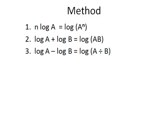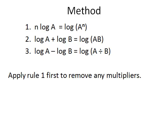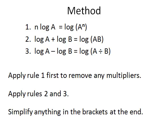Here's our method. We have three rules. We apply rule one first — always get rid of the multiplier outside the bracket before you do anything else. Then you apply rules two and three. Finally, you must not forget to simplify anything in the brackets at the end.